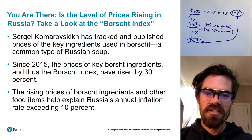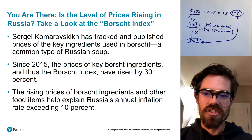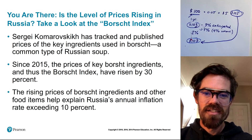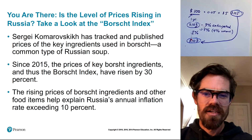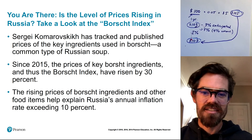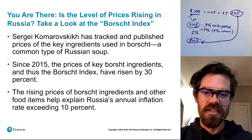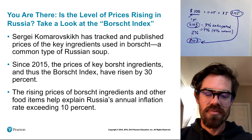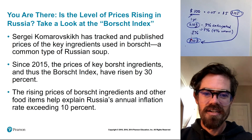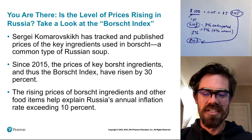This wraps up Chapter 7. Let's look at a real-world example: is the level of prices rising in Russia? Consider the Borscht Index — Sergei Komorskovich tracked and published prices of key ingredients used in Borscht, a common Russian soup. This is an example of a price index. Since 2015, prices of key Borscht ingredients have risen by 30%, and the rising prices of Borscht ingredients and other food items in Russia help explain Russia's annual inflation rate exceeding 10%.